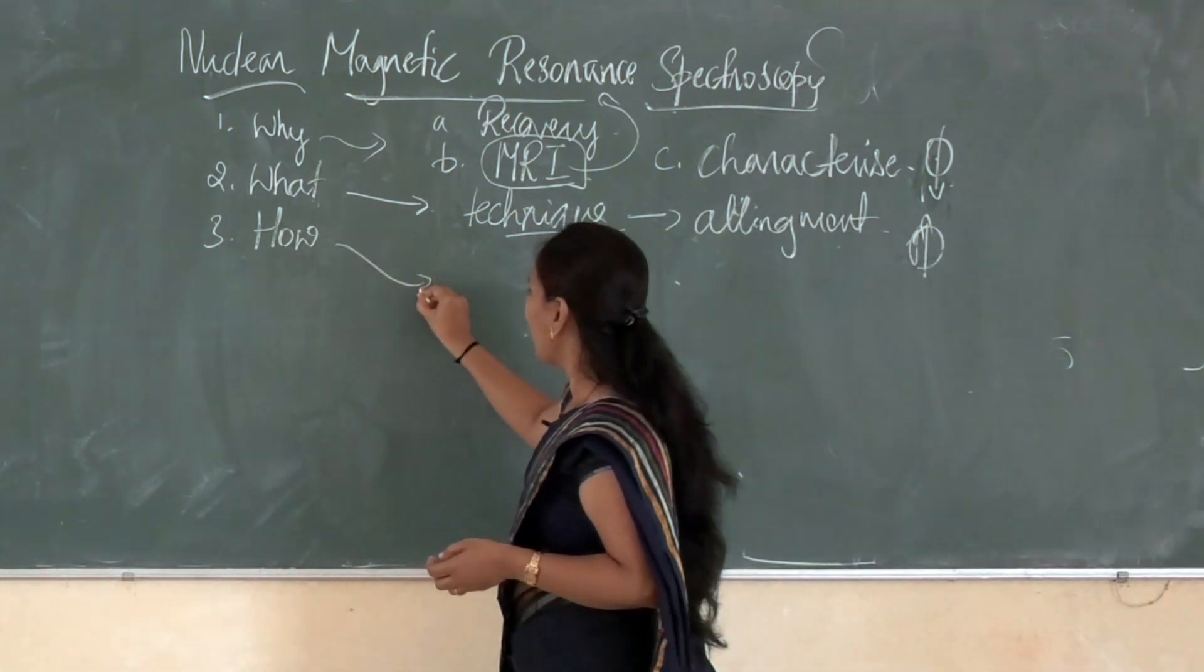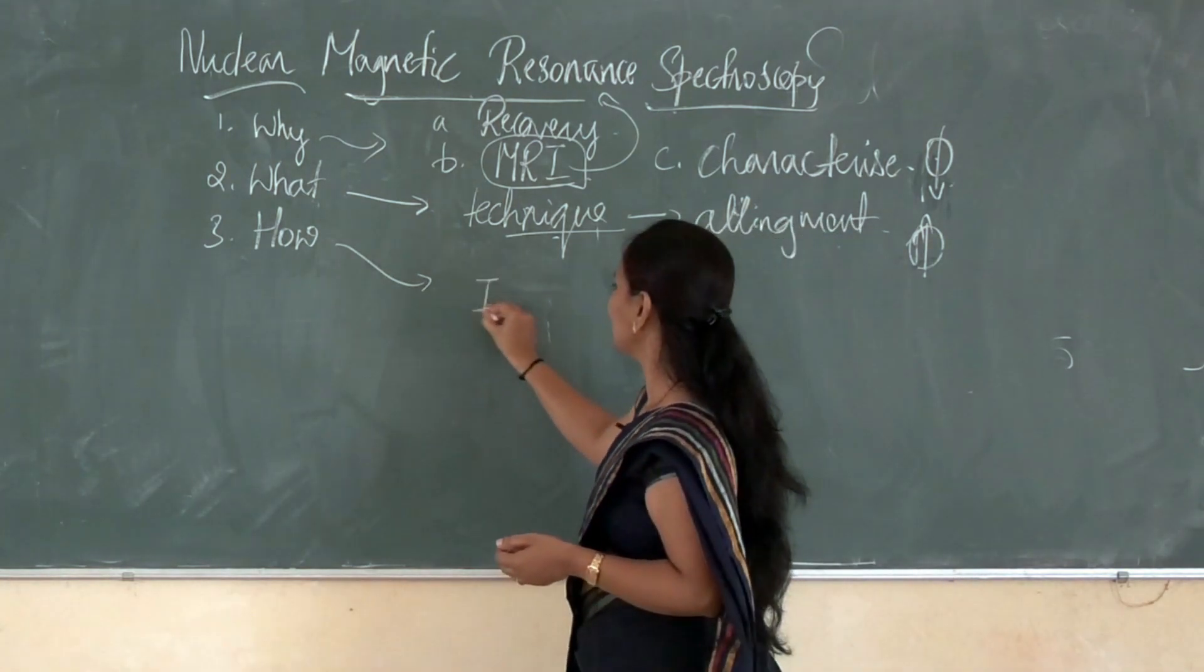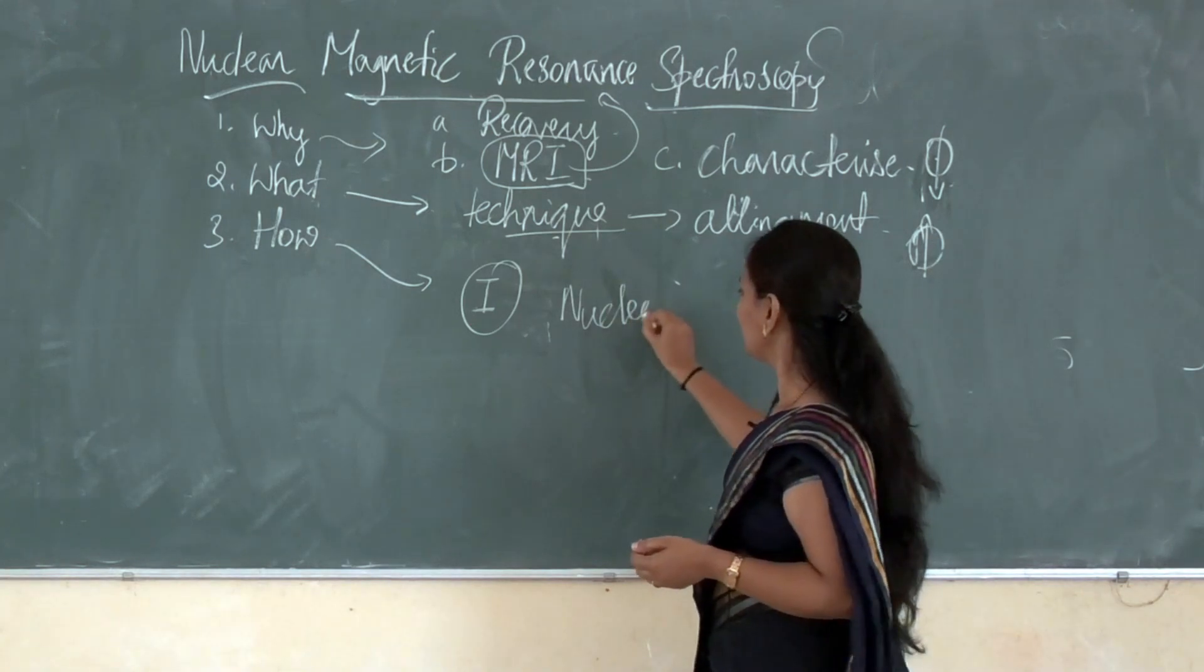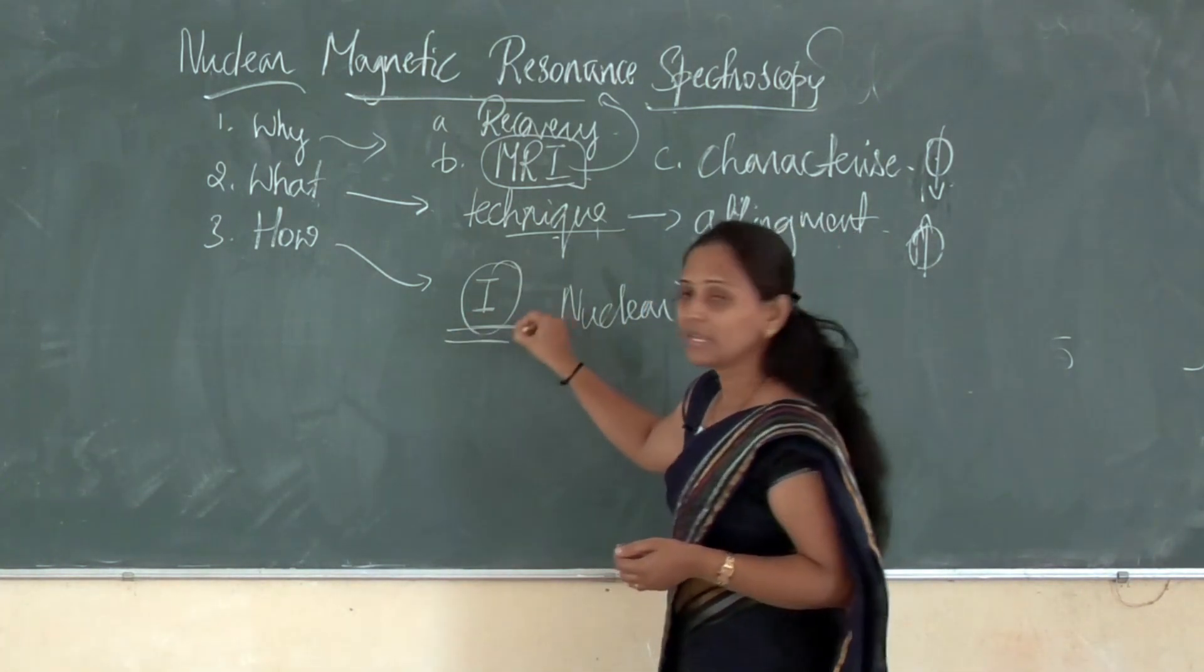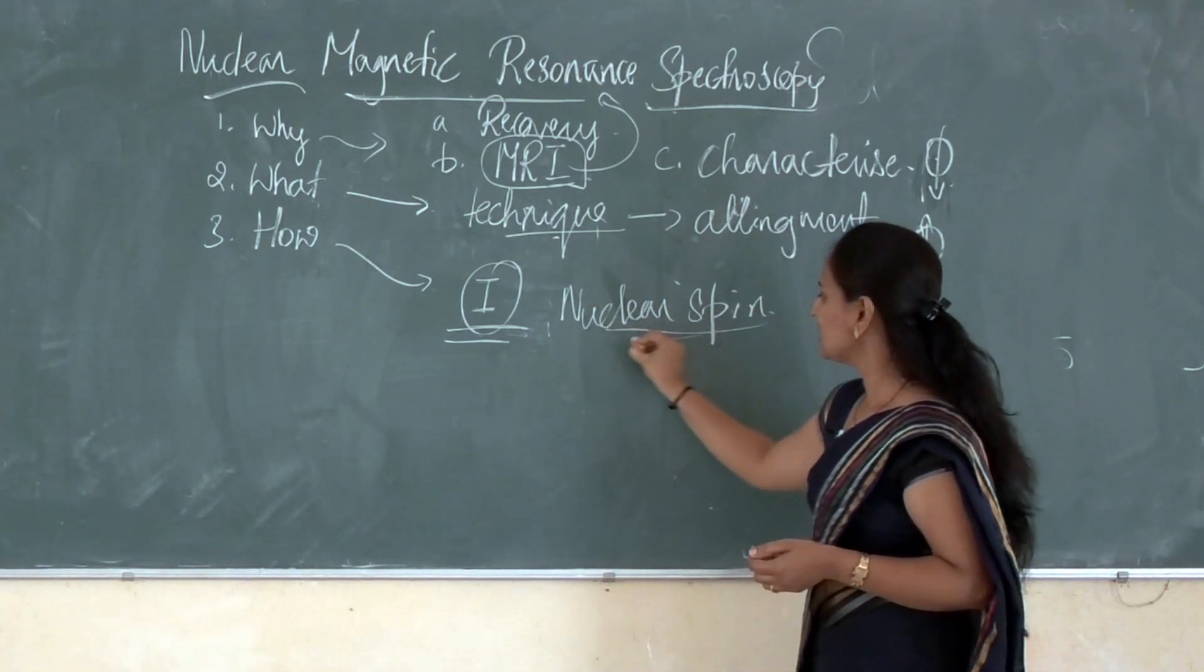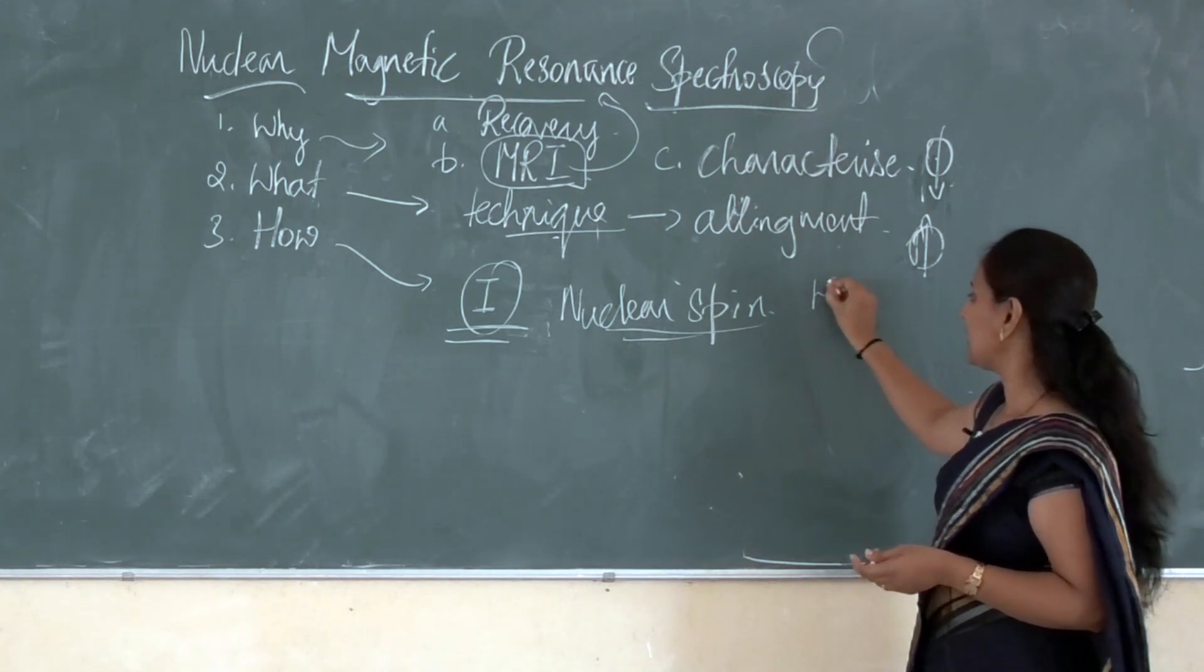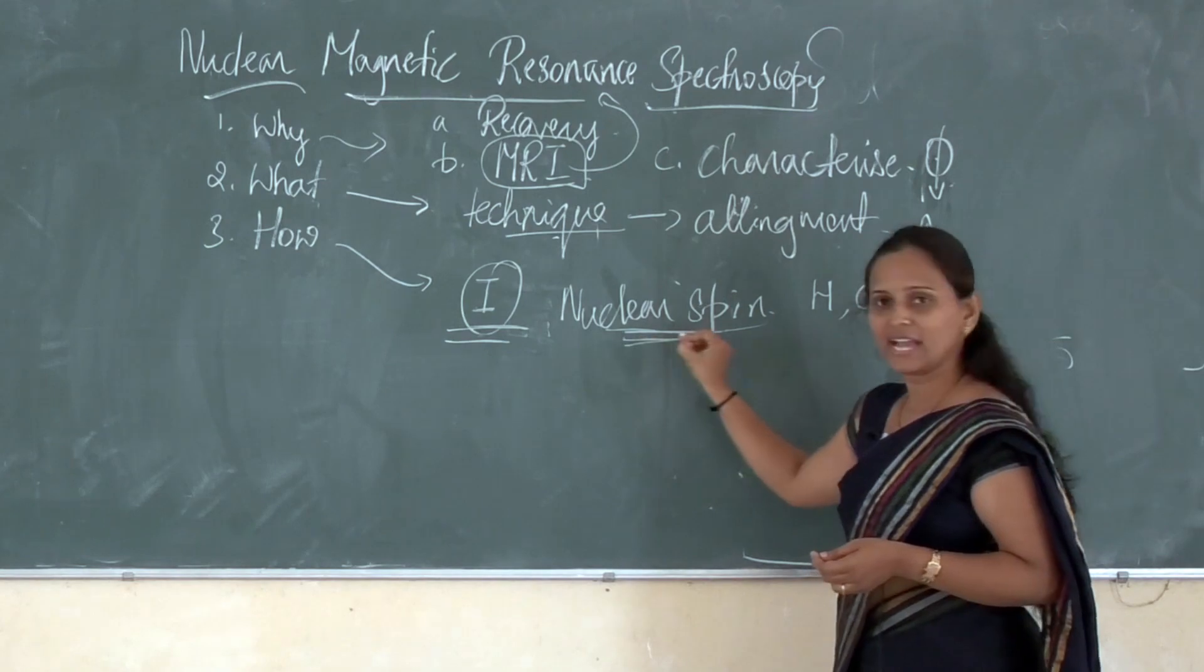How NMR works? NMR works on the basis of nuclear spin, which is denoted by I. What is nuclear spin? All the nuclei or the atoms, we can consider it as proton, carbon, the nuclei will be having one nuclear spin.